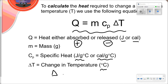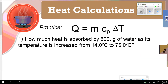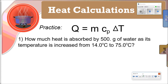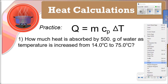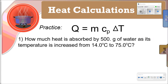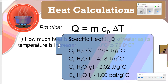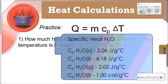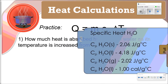Recall that ΔT equals T-final minus T-initial. Let's solve a problem: how much heat is absorbed by 500 grams of water as its temperature increases from 14.0°C to 75°C? The specific heat capacity of water is 4.18 joules per gram·°C.